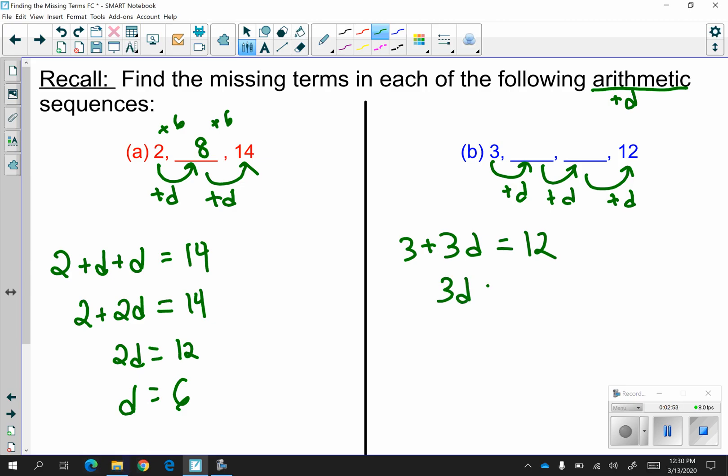And now you're going to solve the resulting equation. So 3d is equal to 9. So d has to equal 3. That means 3 plus 3 is 6, 3 plus 3 is 9. And just double check your work. 9 plus 3 gives you 12, which is what you wanted.